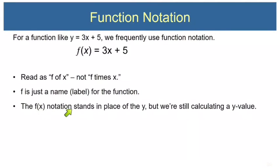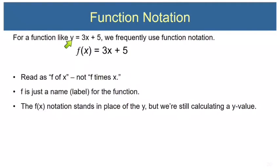So f is just a name or a label for the function. The f of x notation stands in place of the y, but we're still calculating a y value. The old way we wrote it was y equals 3x plus 5; now we write it as f of x equals 3x plus 5. So f of x simply takes the place of the y, but when you plug in an x value, you're still getting a y value on your graph.